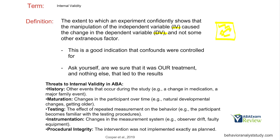Let's say in the client's home — that's our experimental box. Are we controlling the behavior in the home when we're controlling for all these confounds and extraneous variables? We need to make sure it's our treatment and nothing else that led to the results.